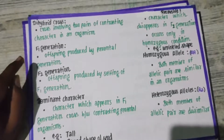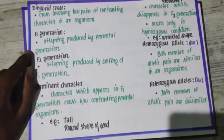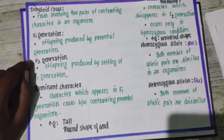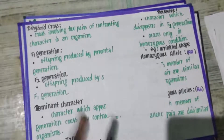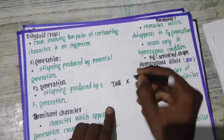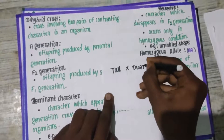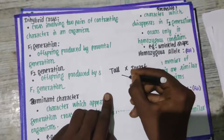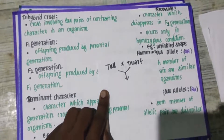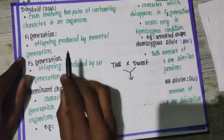Next, F1 generation. When we take the parental organisms — for example, pure tall and pure dwarf — and cross them, the result is the F1 generation, also called the First Filial Generation. The offspring produced from this cross are the F1 generation.